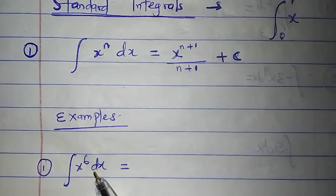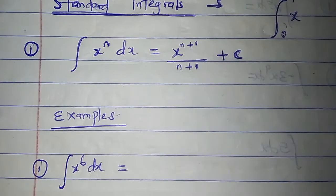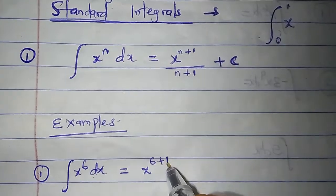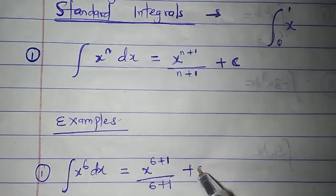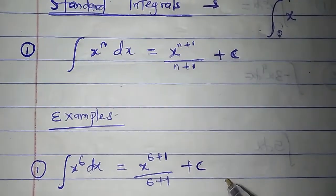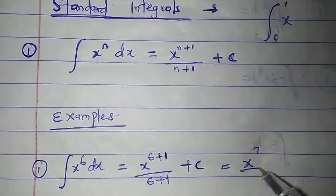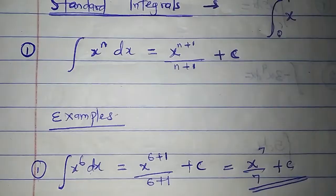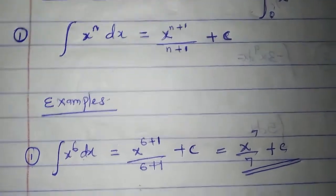Let's see some questions. I want to integrate x to the power of 6. Going by this principle, it will be x to the power of 6 plus 1, divided by 6 plus 1, plus arbitrary constant c. 6 plus 1 is 7, so x to the power of 7 all over 7, plus c. This gives us the indefinite integral of x to the power of 6 dx.